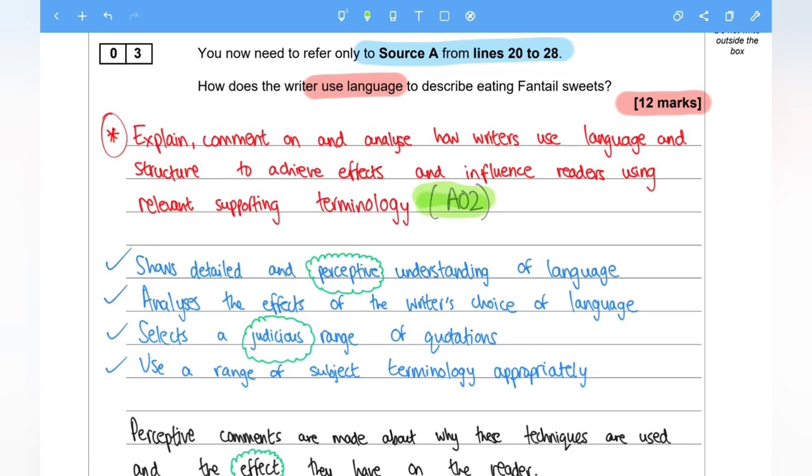It's the following: Explain, comment and analyse how writers use language and structure to achieve effects and influence readers using relevant supporting terminology.